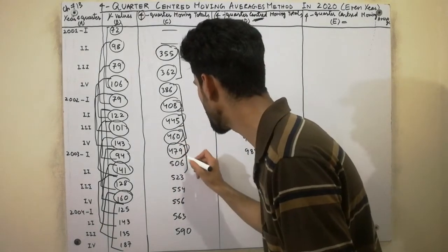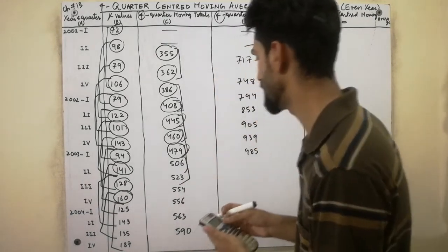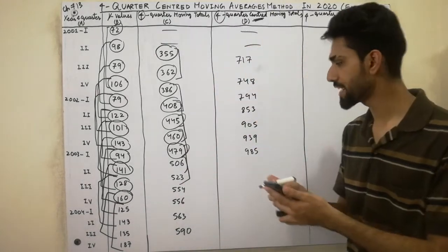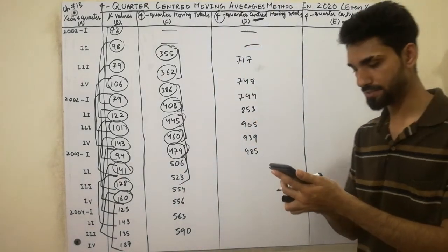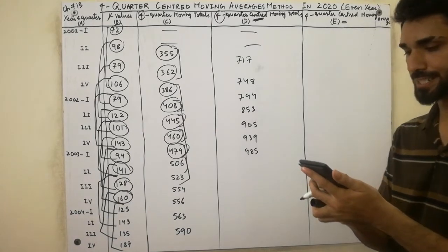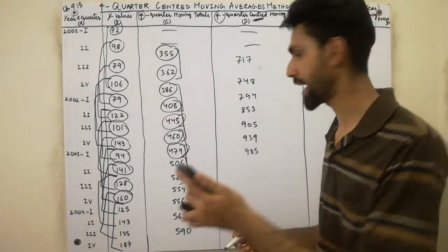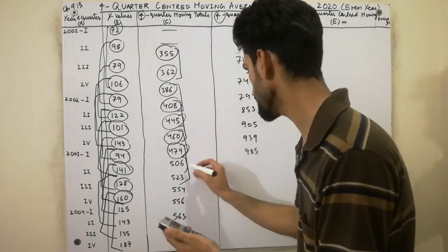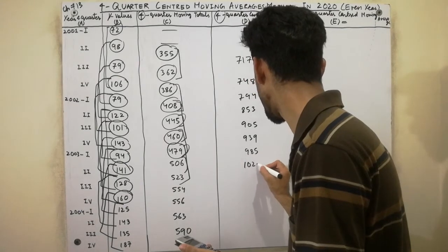Now we leave that value and next we take the next two values: 506 plus 523. We get the value 1029.